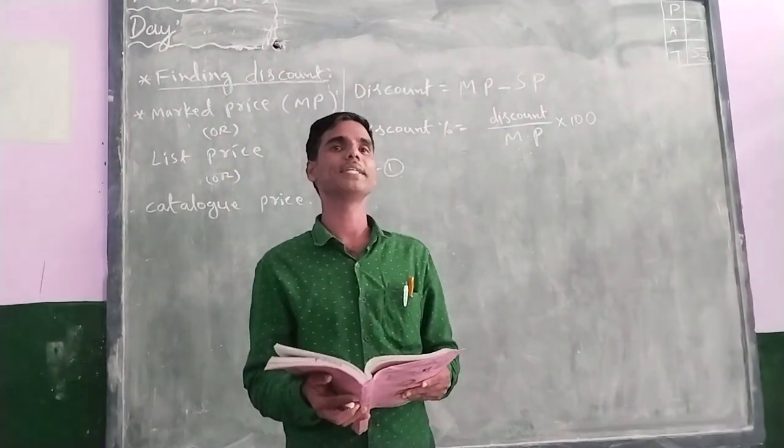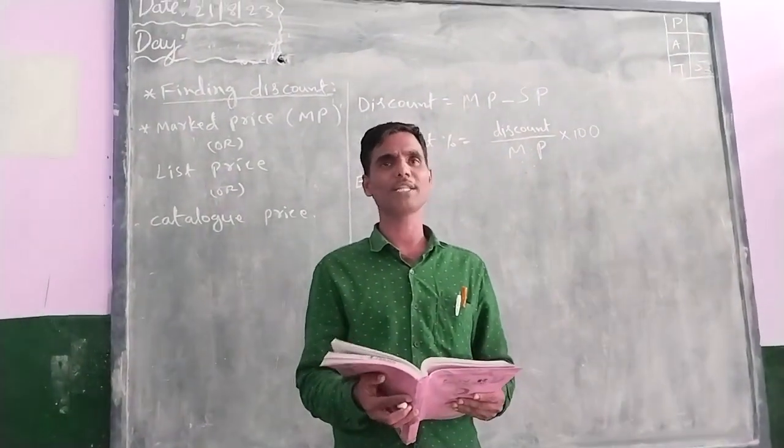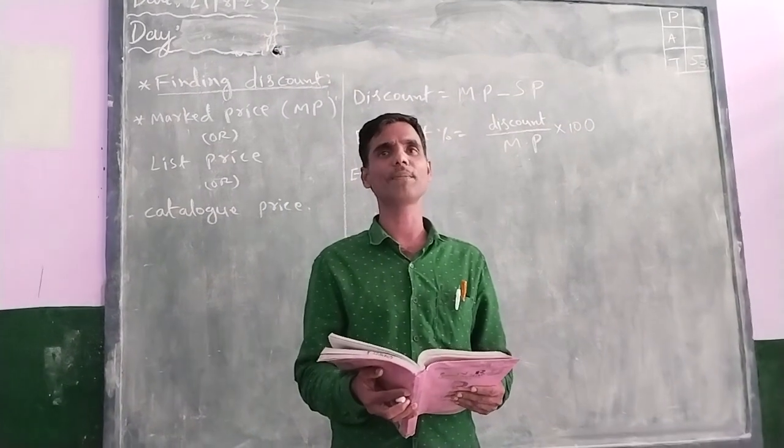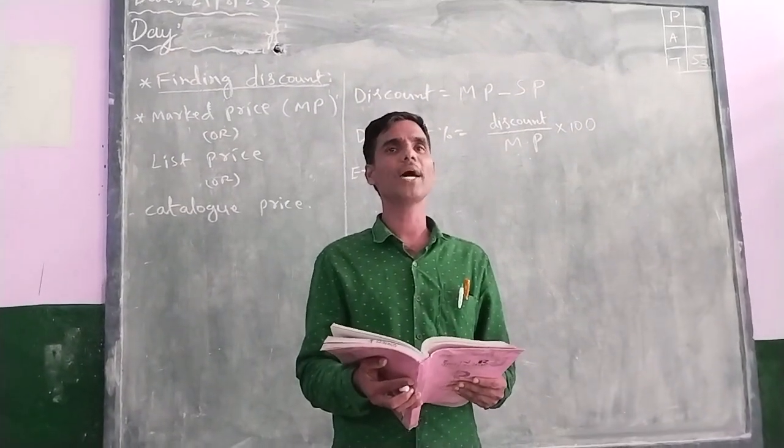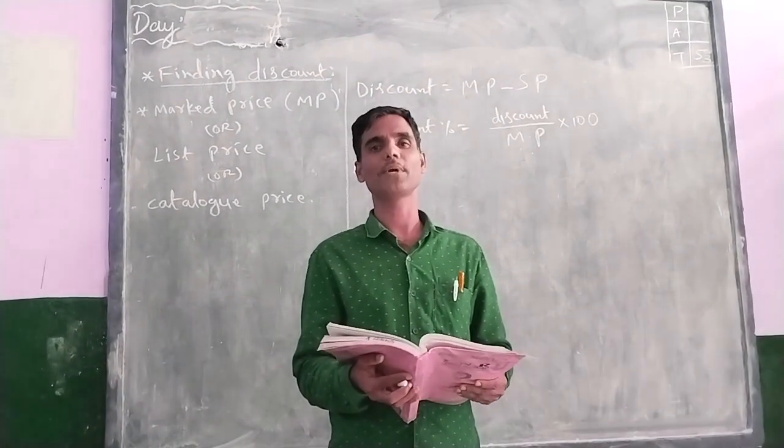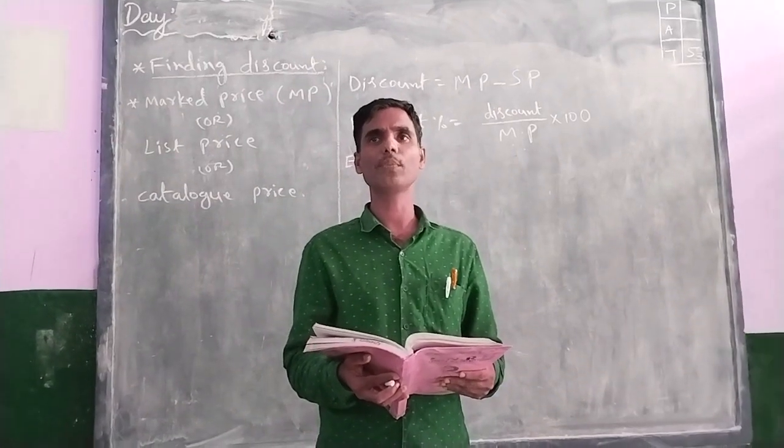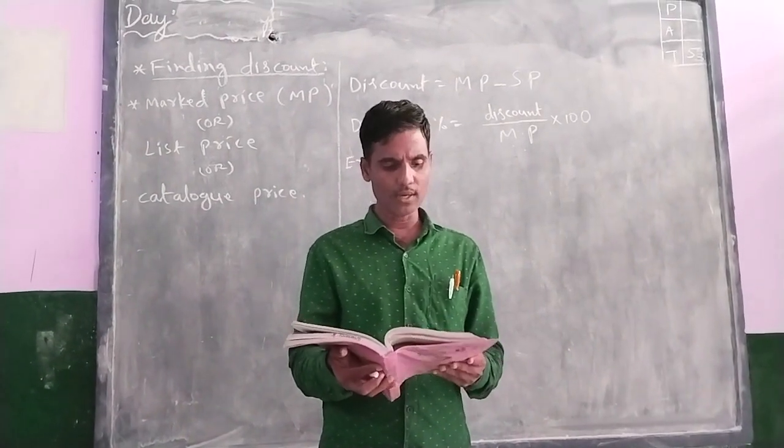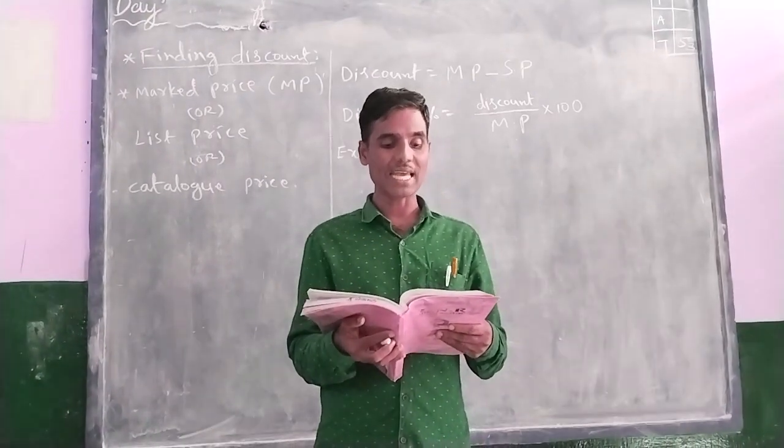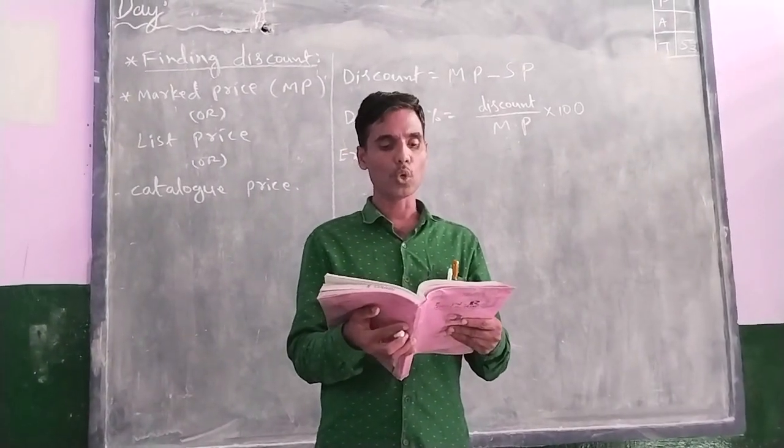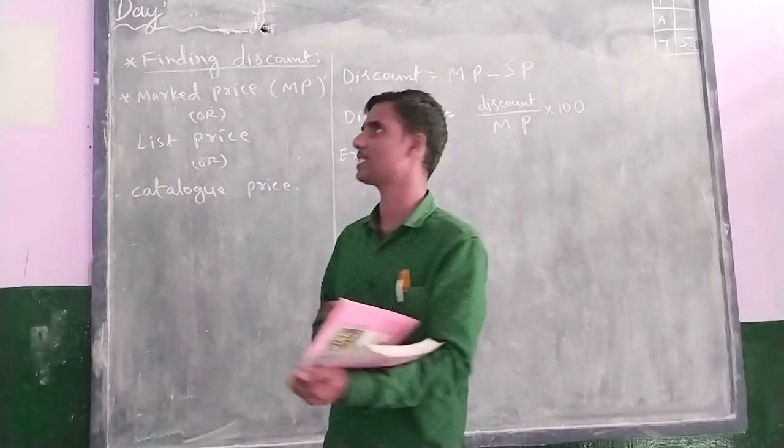Okay, now we are discussing 8th class mathematics, 5th chapter, comparing quantities using proportion. In example 1, page number 106, a cycle is marked at Rs. 3600.